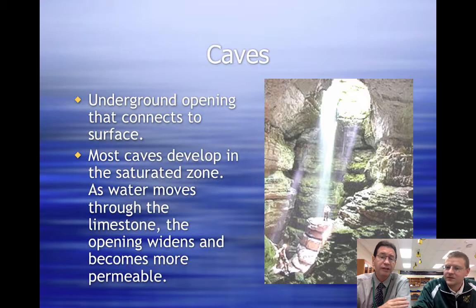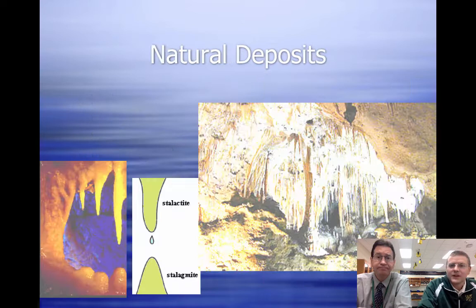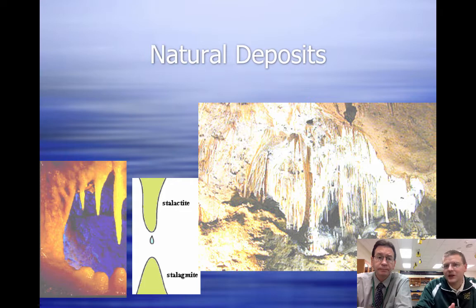Caves develop in areas where the water has saturated underneath the ground. As that water — the carbonic acid in it — dissolves the limestone, it's then carried away when the water disappears, leaving the opening and you get a cave. Some features in caves are these little icicles hanging from the ceiling or these mounds that are sitting on the ground.